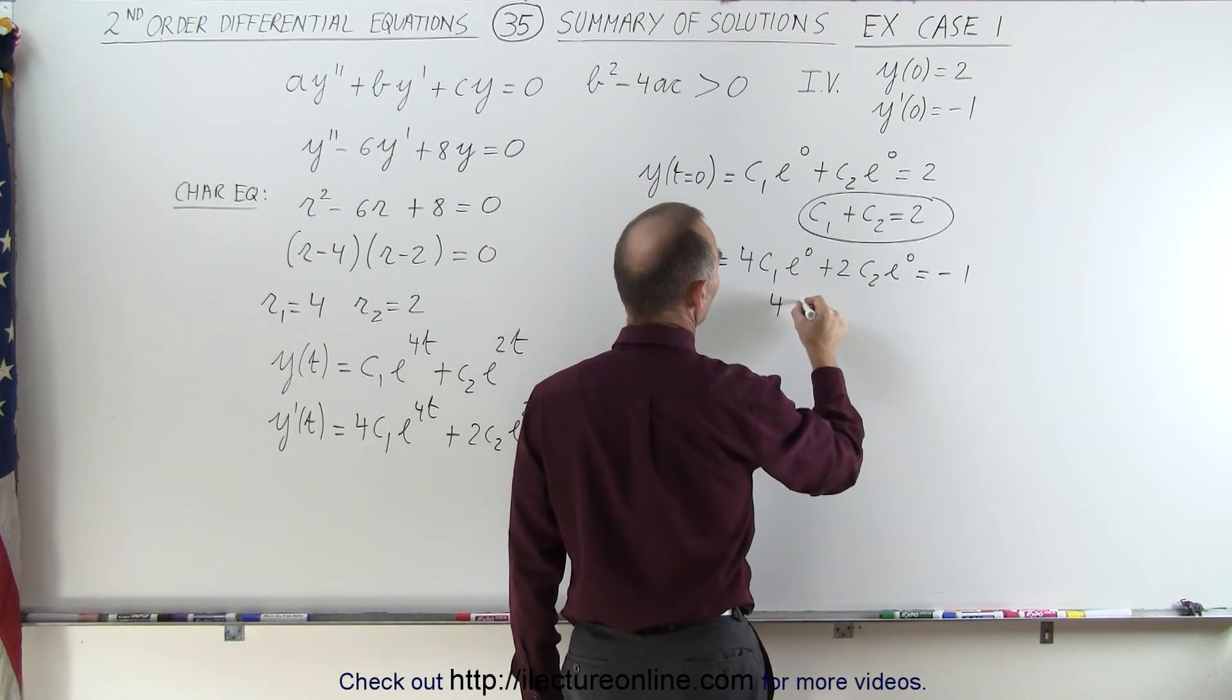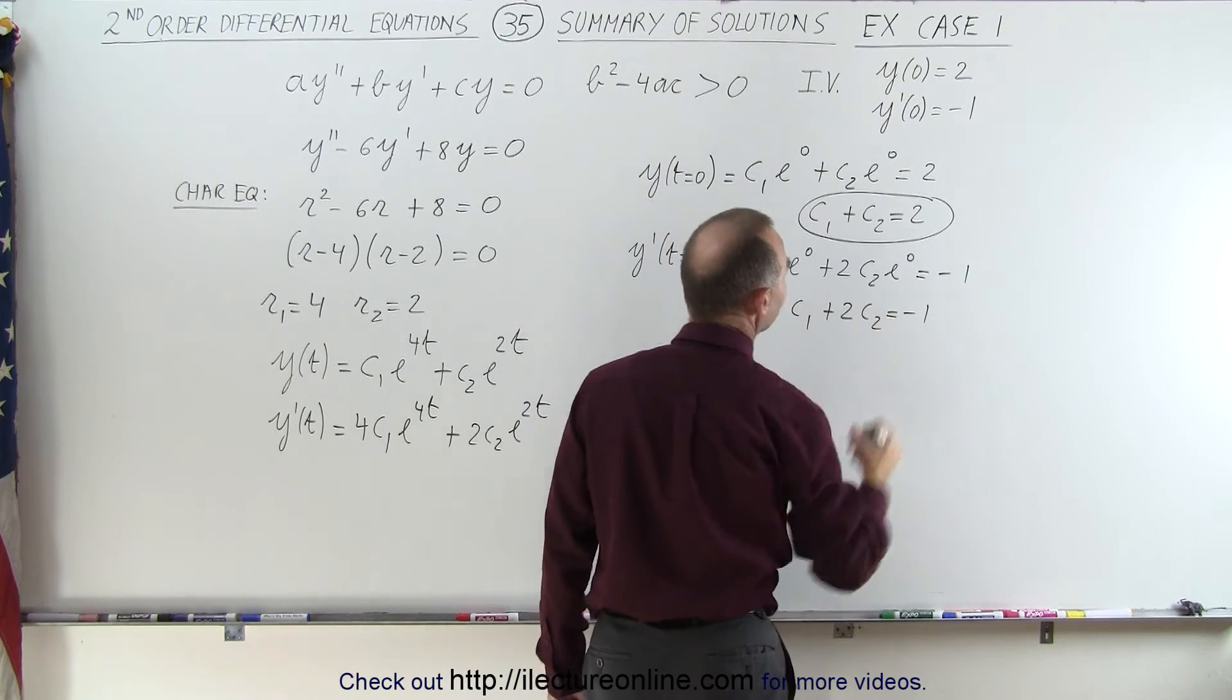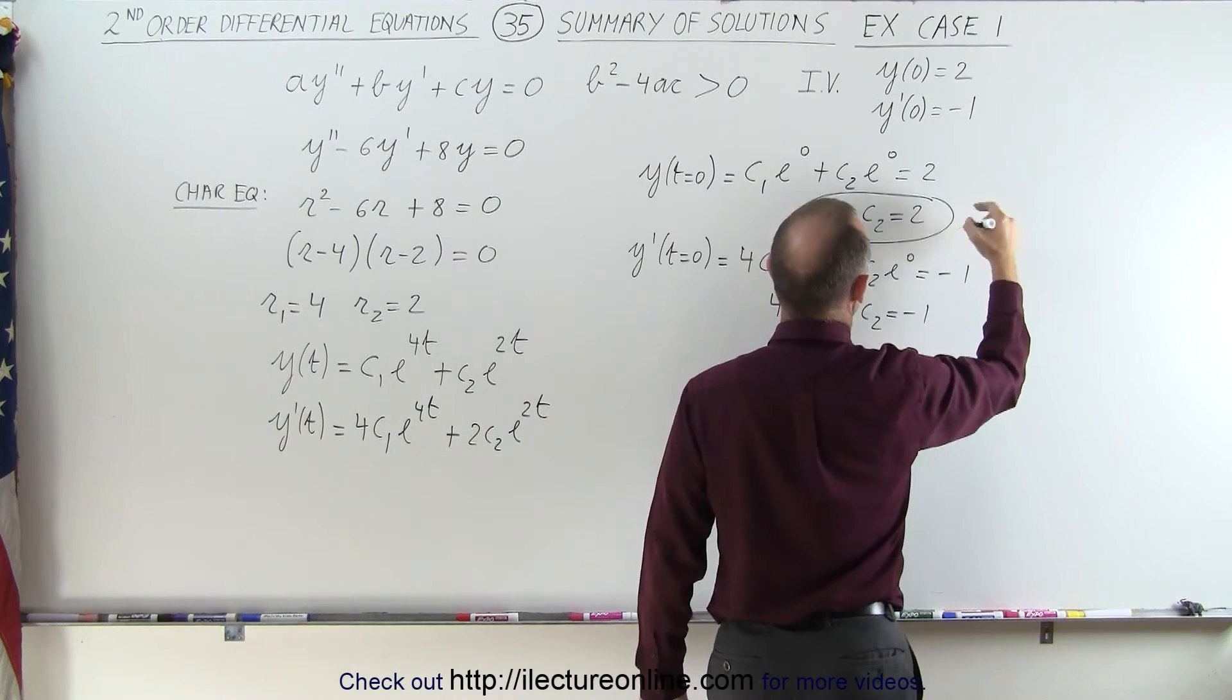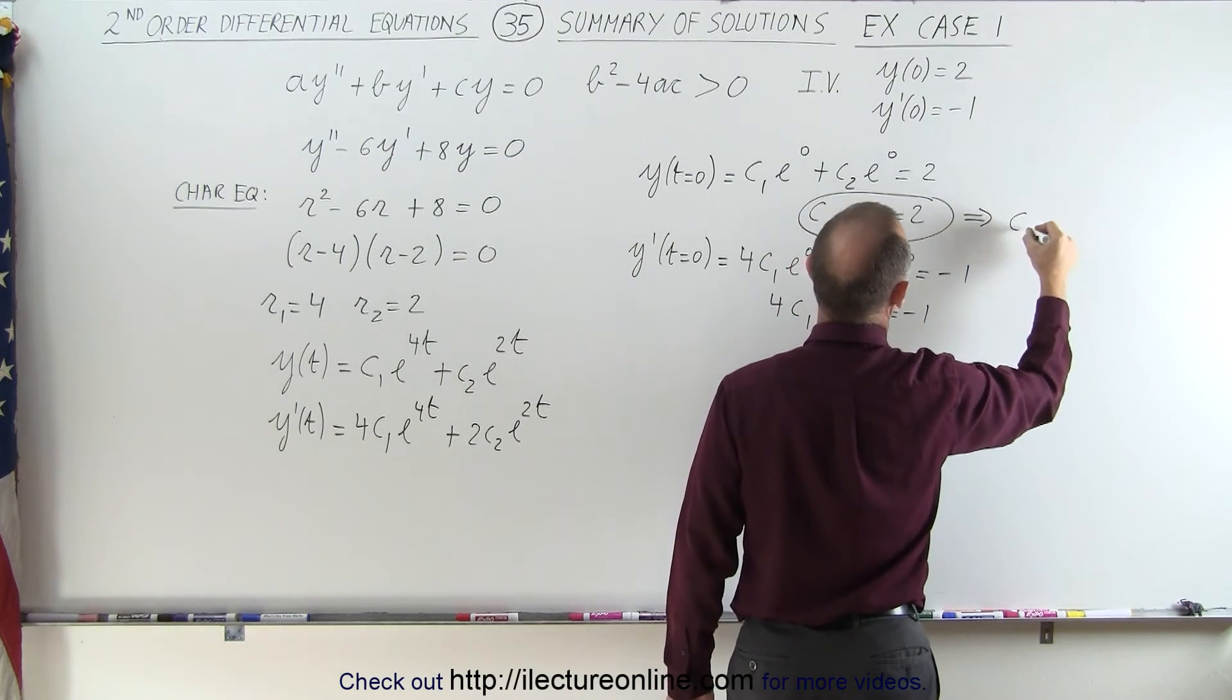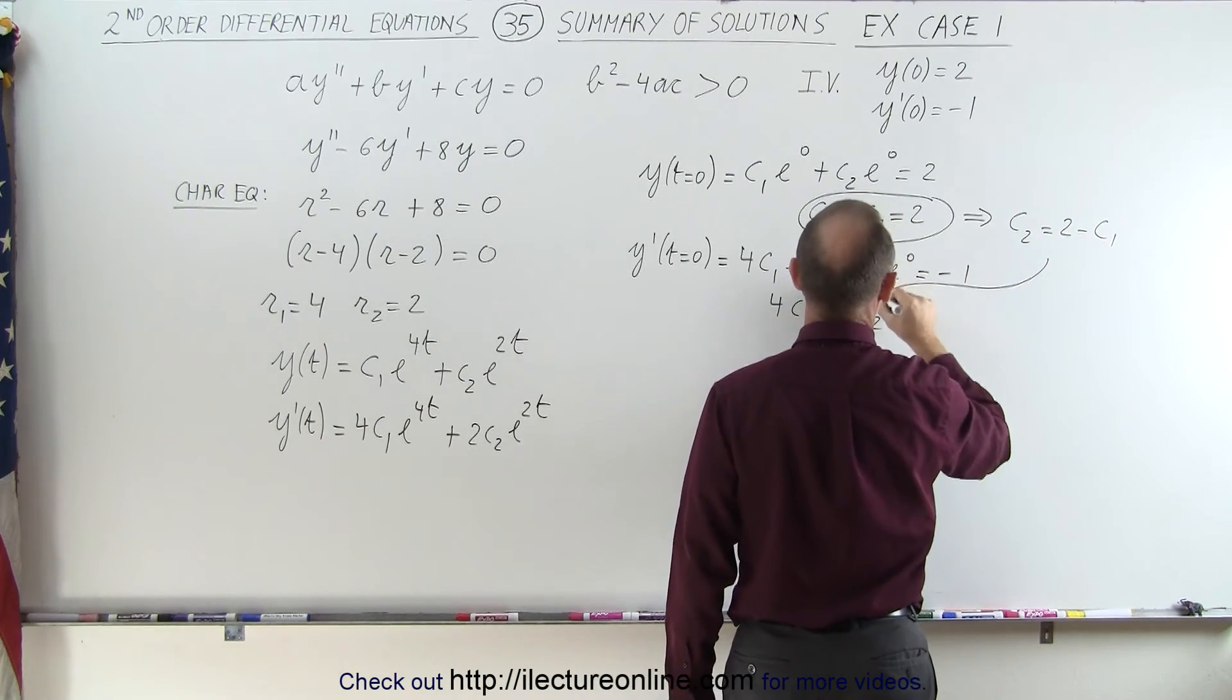In other words, 4c1 plus 2c2 equals negative 1. I can now use this equation right here to solve this for c2. c2 becomes equal to 2 minus c1, and I can plug that in here.